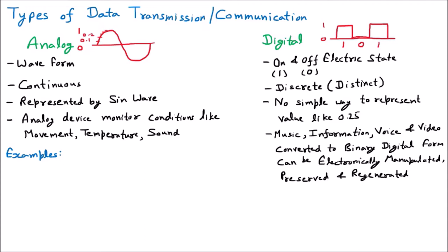The first example of an analog signal is speech — if I am talking to you in a continuous manner, that is speech, which is an analog signal. Another example is voice on the telephone — when we talk with each other on a telephone, that is analog. Even an analog watch is an example — the dial is moving continuously, not like a digital watch. It moves from 12 to 12.1, 12.2, and so on — that is an analog watch.